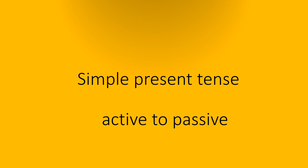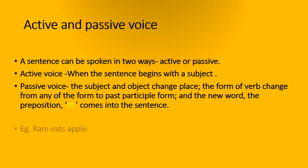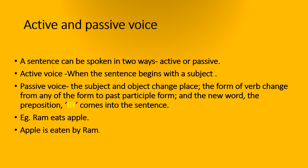Simple present tense: active to passive voice. 'Ram eats apple' — this is a simple present tense sentence. The passive voice is: 'Apple is eaten by Ram.' In the first sentence, Ram is the subject and apple is the object. Whereas in the second sentence, apple is the subject and Ram is the object. The verb is in the third form: 'eaten', and the preposition 'by' is there before the object.